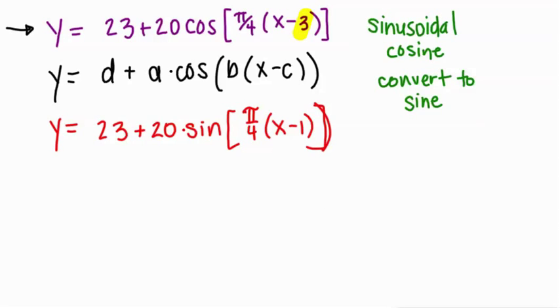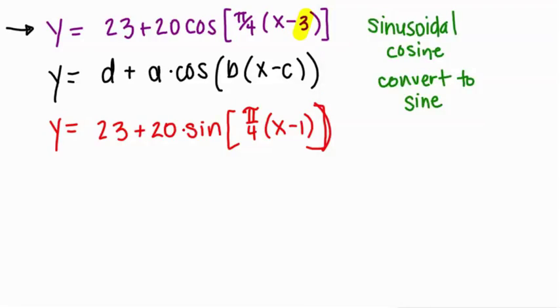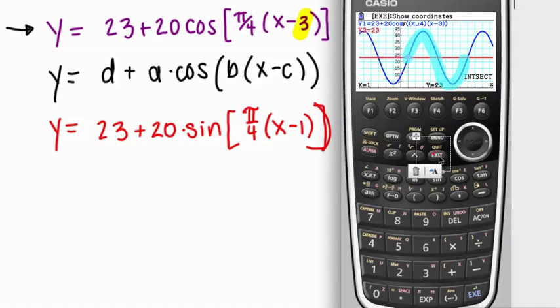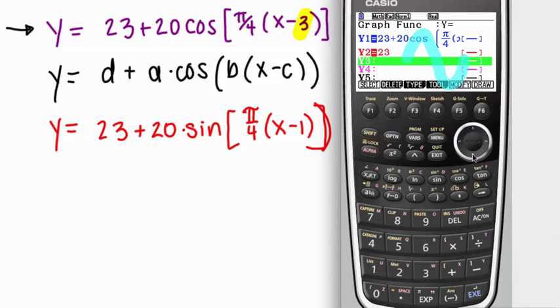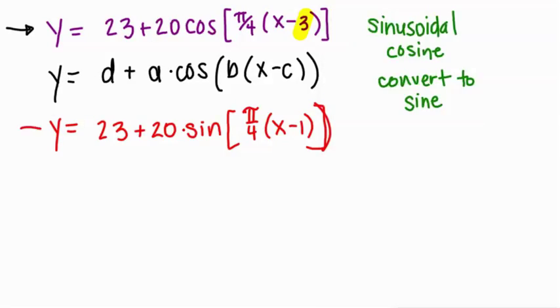That should be a bracket. I'm not going to waste time, though. If I were to put this into my calculator, 23 plus 20 sine, parentheses, pi over 4, parentheses, x minus 1, this will be a green graph and when I draw it you're going to see that it goes right over the original graph. So they are indeed the same graph. So these two graphs are indeed the same.